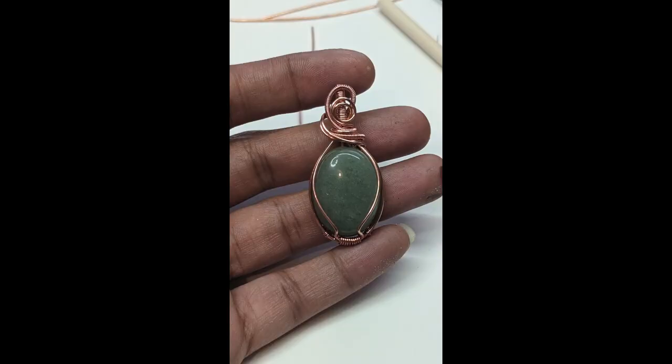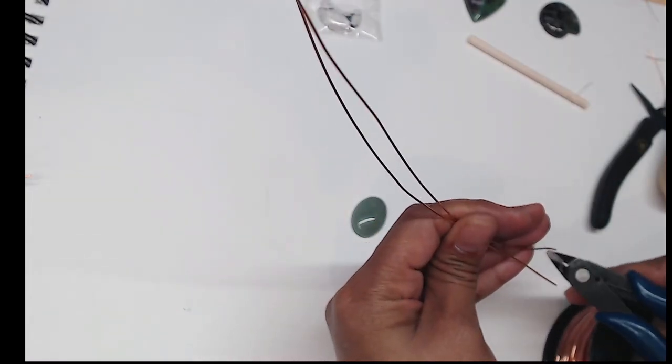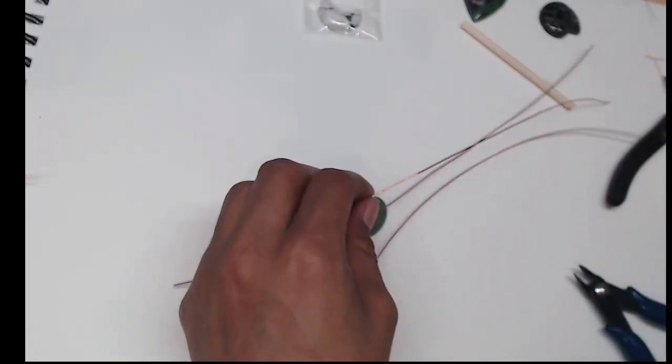And this is a picture of the piece that we'll be making today. Start by cutting three pieces 12 inches long of 20 gauge round wire.